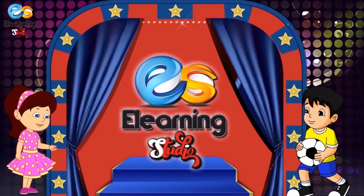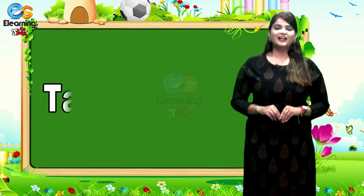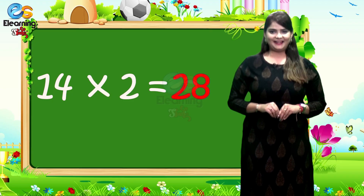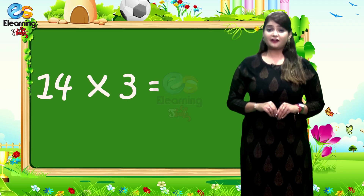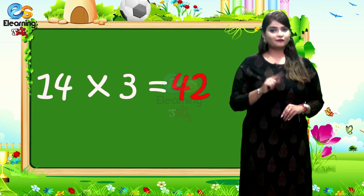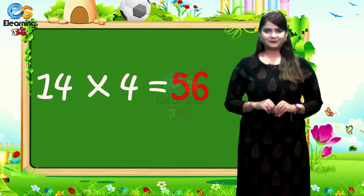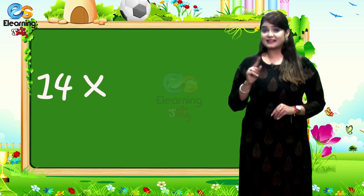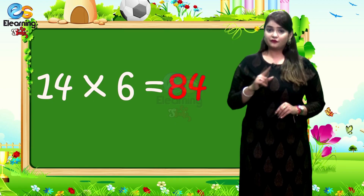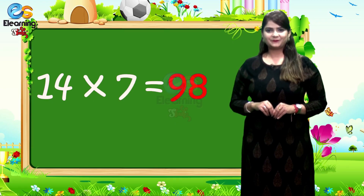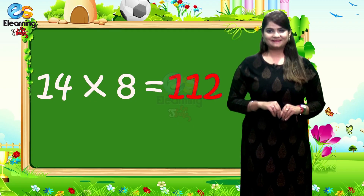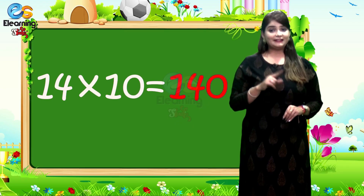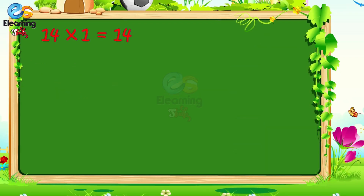E-Learning Studio. Table of 14. 14-1's are 14. 14-2's are 28. 14-3's are 42. 14-4's are 56. 14-5's are 70. 14-6's are 84. 14-7's are 98. 14-8's are 112. 14-9's are 126. 14-10's are 140.